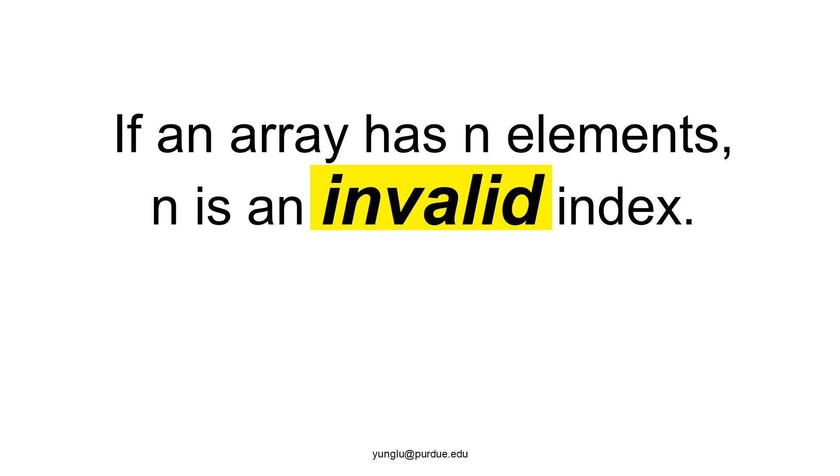Please read it aloud with me. If an array has n elements, n is an invalid index. Let's read it again. If an array has n elements, n is an invalid index.